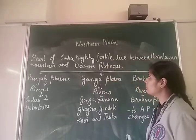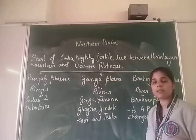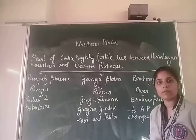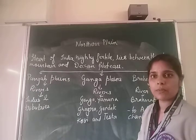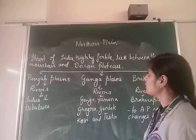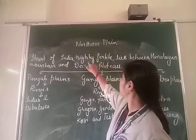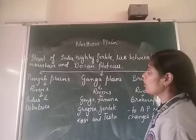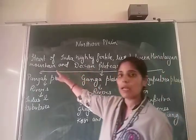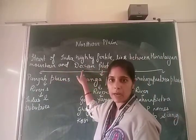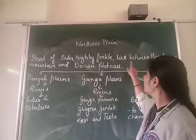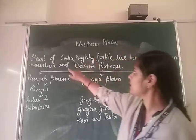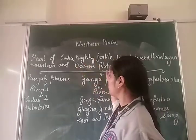What does the word fertile mean? Fertile means the capacity or ability of the soil to grow good crops. These Northern Plains are highly fertile and lie between the Himalayan Mountains and the Deccan Plain. So where does the Northern Plain lie? It lies between the Himalayan Mountains and the Deccan Plain.